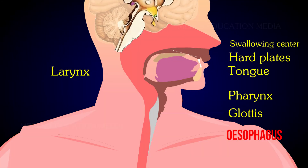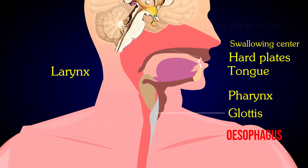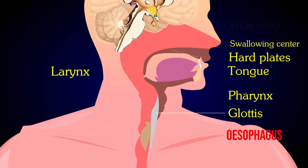During swallowing, the soft palate is elevated and the larynx gets raised. The tongue forces the food back into the pharynx. The epiglottis closes the glottis and the food slowly passes into the esophagus.